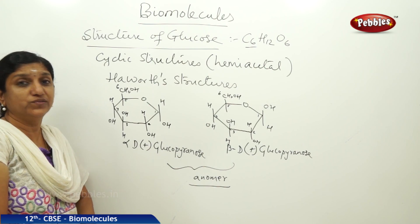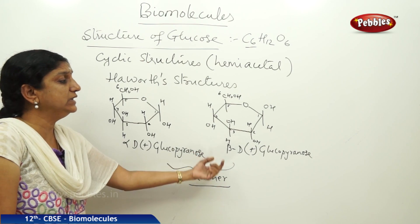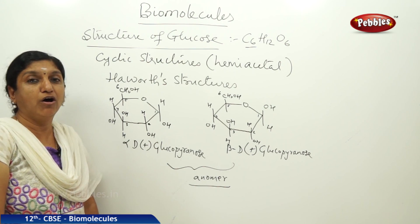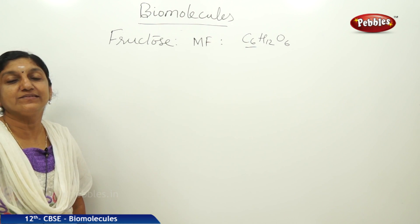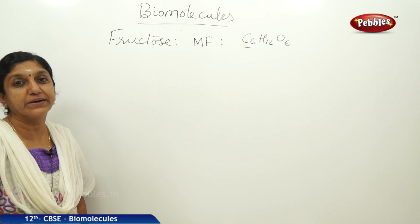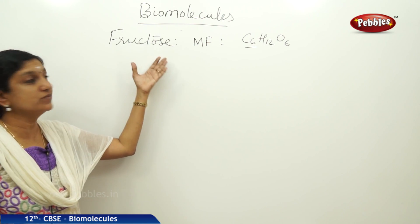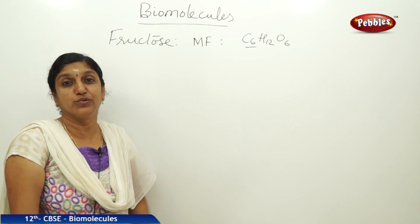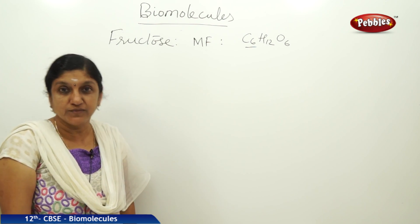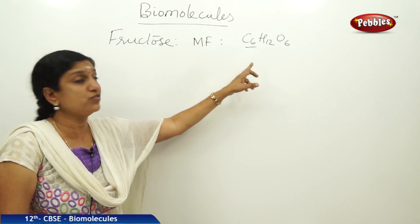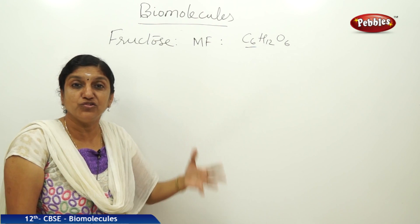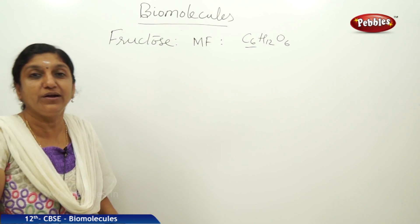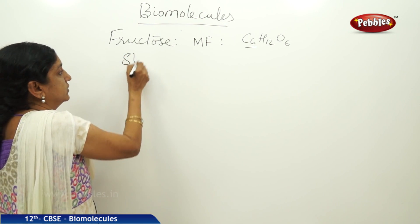The two anomers of glucose are the alpha D plus glucopyranose and beta D plus glucopyranose. So this is about the structure and structural elucidation of glucose. Now let us discuss the next monosaccharide commonly found in nature. It is also called a fruit sugar and it is fructose. The molecular formula of fructose is the same as that of glucose — C6H12O6 — but the arrangement of the carbon, hydrogen, and oxygen atoms in the molecule is different. So let us try to understand the structure of fructose.